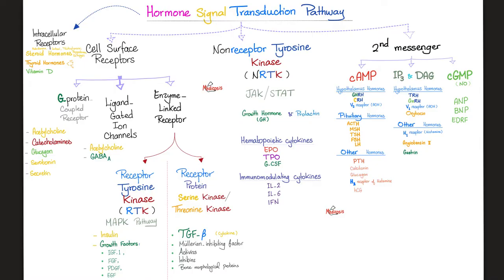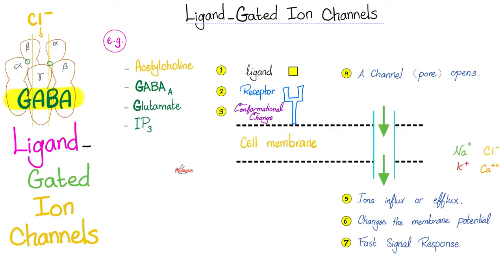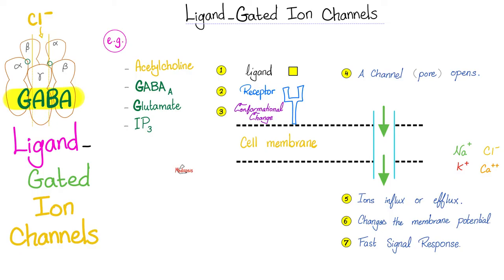Next, ligand-gated ion channels. Examples include GABA, acetylcholine, glutamate, and IP3. Something — the ligand — binds to the receptor, like a key in a lock, like a truck in a dock, like a screwdriver in a screw. Once active, a channel opens so ions can influx or efflux. GABA is an inhibitory neurotransmitter in the brain. It works by opening a chloride channel — chloride, being negative, enters the neuron, causing hyperpolarization and inactivation. Conversely, when something positive like sodium enters the neuron, it becomes depolarized and activated.